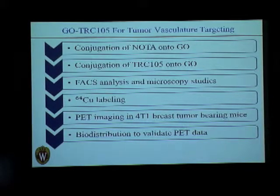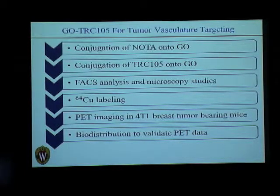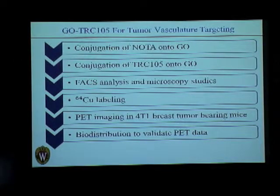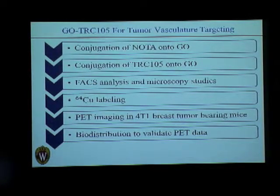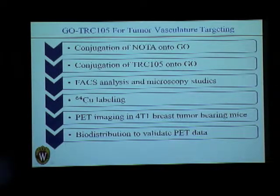This is my workflow. We took graphene oxide nanosheets around 10 to 15 nanometers in dimensions and conjugated NOTA — our bi-functional chelator for radionuclides — onto it. Then we attached the antibody as our targeting ligand. These constructs were tested in vitro, in vivo, and by microscopy and FACS analysis. After obtaining good results, we labeled copper-64, a radionuclide for PET imaging, onto the constructs, which were then intravenously injected into tumor-bearing mice. We imaged them at different time points from 3 hours to 48 hours, then sacrificed the mice and carried out biodistribution using a gamma counter to validate the PET data.